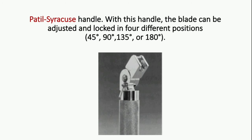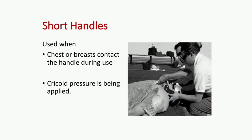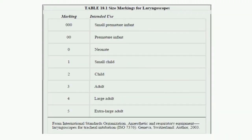The Padil Syracuse handle is a special type of handle in which the blade can be adjusted and locked in four different positions: 45 degrees, 90 degrees, 135 degrees, or 180 degrees. The handle comes in different lengths; short handles are particularly useful when the chest or breast contacts the handle during use.